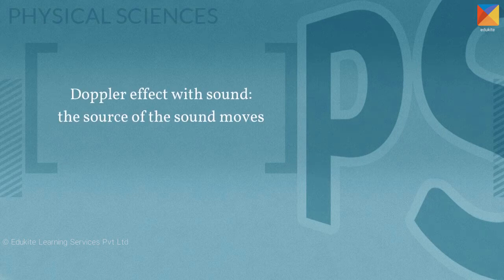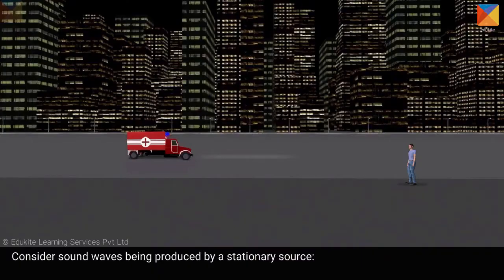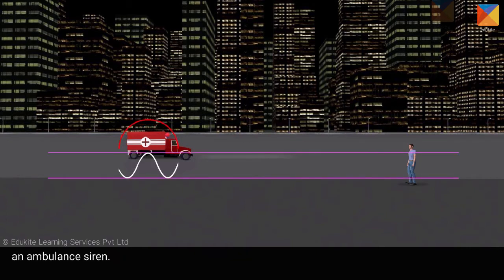Doppler effect with sound: the source of the sound moves. Consider sound waves being produced by a stationary source, an ambulance siren. The listener is also stationary.